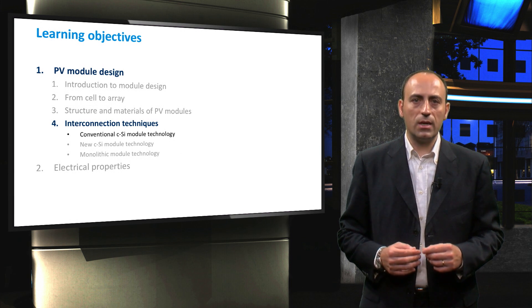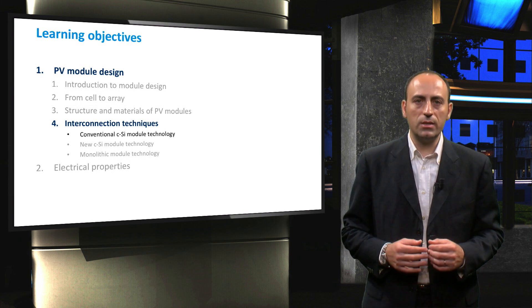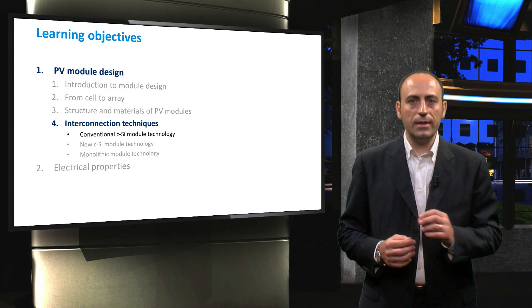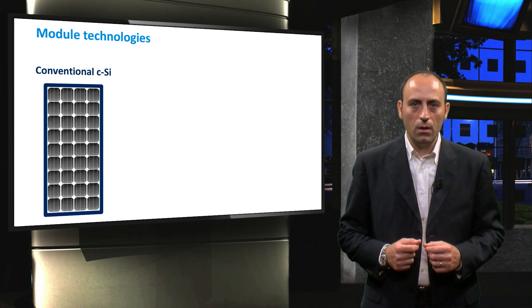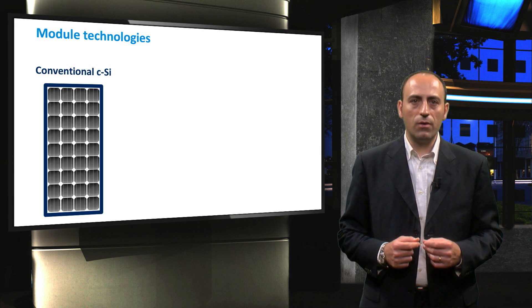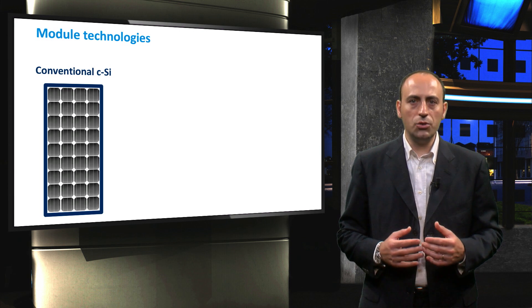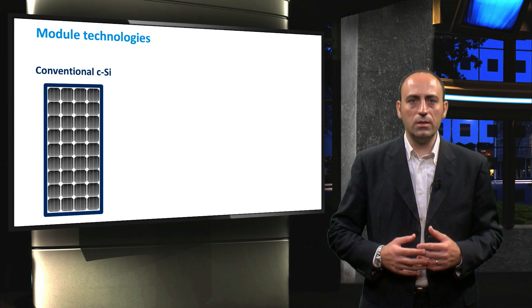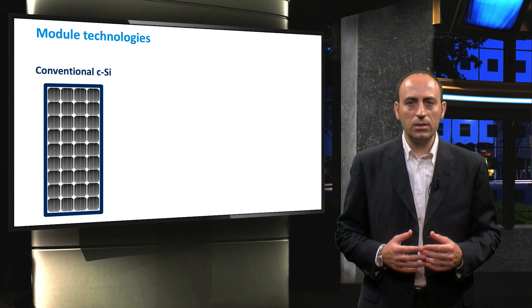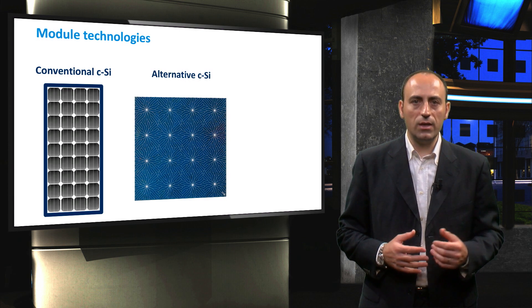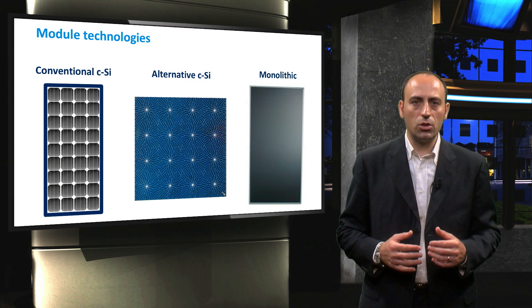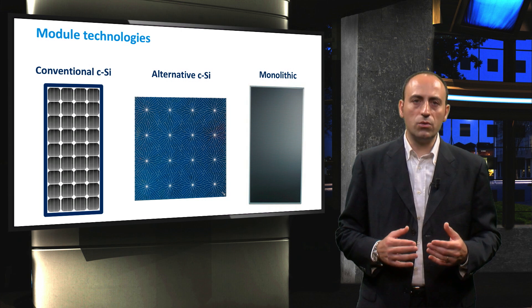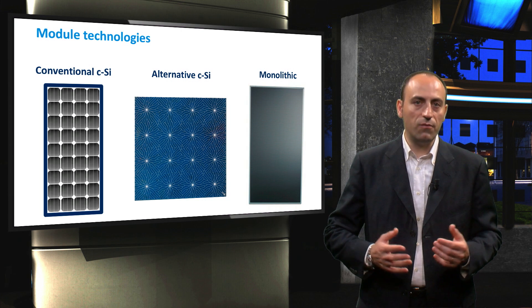In this video, we will discuss the connection in conventional crystalline silicon technologies, and in the next video we will discuss other interconnection techniques. The interconnections can be roughly divided into three groups. The most widespread and mature group is the conventional crystalline silicon technology. In the next video, we will discuss an alternative technique for crystalline silicon PV modules and the monolithic integration of solar cells, the technology used for thin film PV modules.